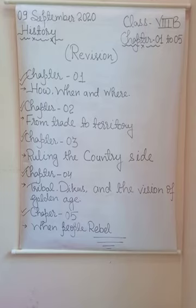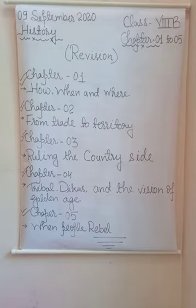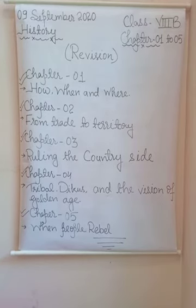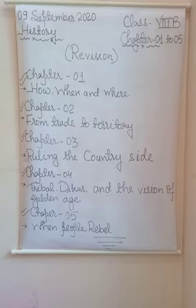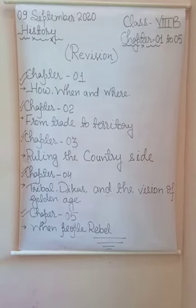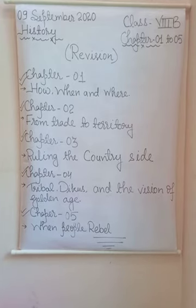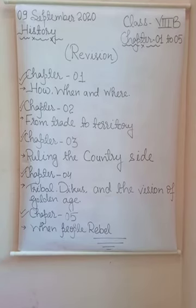The next topic is: how do we know administration? One important source is the official records of the British administration. The British felt all important documents and letters needed to be preserved, and many specialized institutions like archives and museums were established to preserve important records. Administrative sources only represent half of the picture, as they were all written and maintained by British officials.